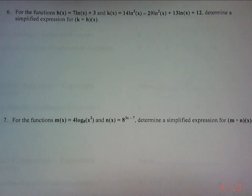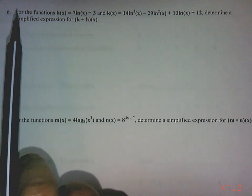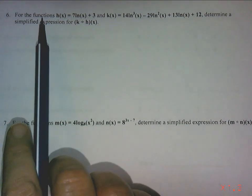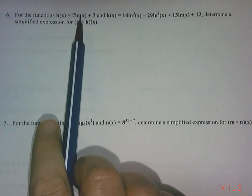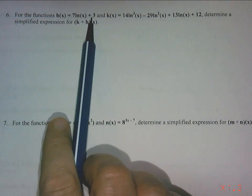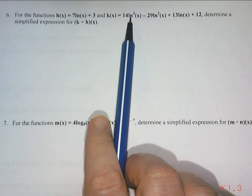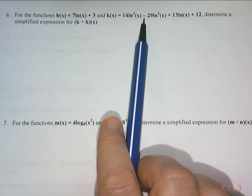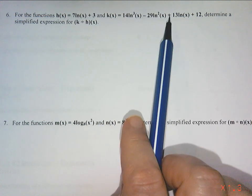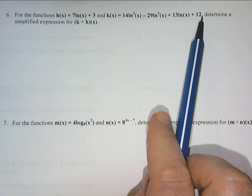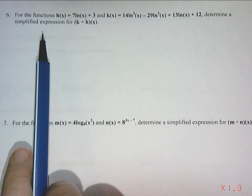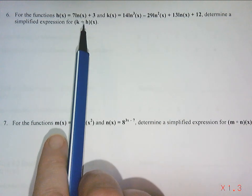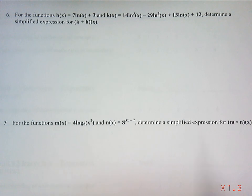This is part 6 of our video on operations with logarithmic functions. So our question says, for the functions h of x equals 7 times ln x plus 3, and k of x is 14 times ln cubed x minus 29 ln squared x plus 13 ln x plus 12, determine a simplified expression for k divided by h of x.